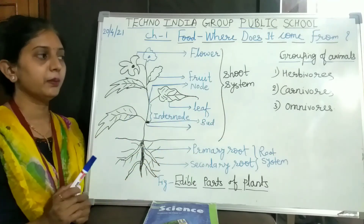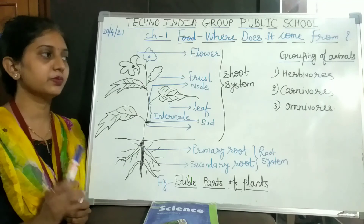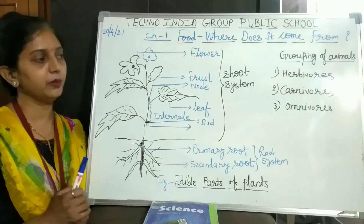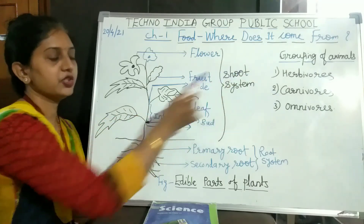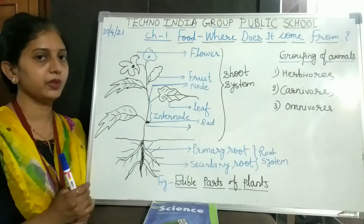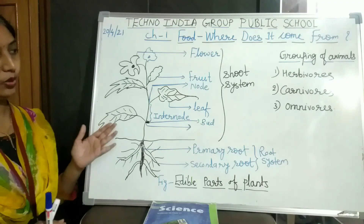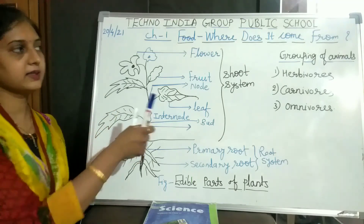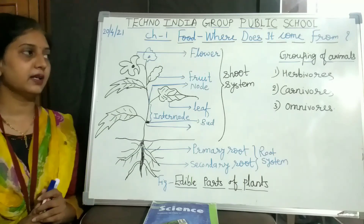The third group is omnivores. Omnivores are animals that depend on both plants as well as other animals. These are the three major groups of animals based on their eating habits. Today we discussed the edible parts of plants and the grouping of animals. I hope all students understood this.